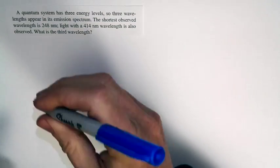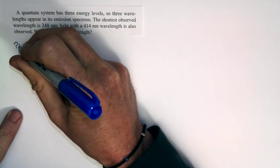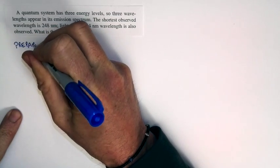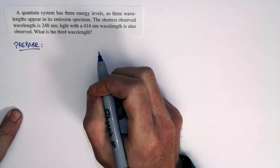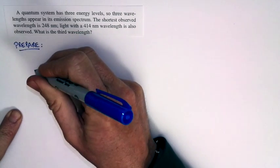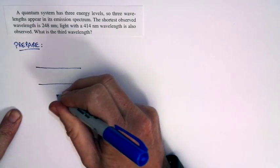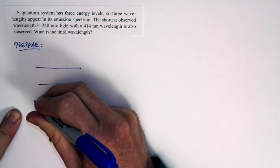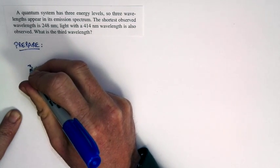Let's take a look at what this question is asking. We're told we have a quantum system that has three energy levels. Let's go ahead and sketch those out. I've got three possible energy levels, and let's label them one, two, and three.